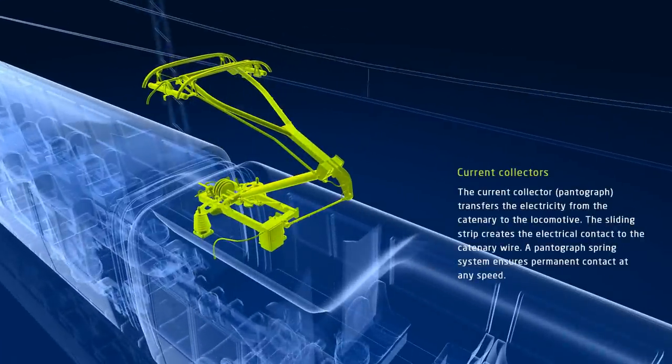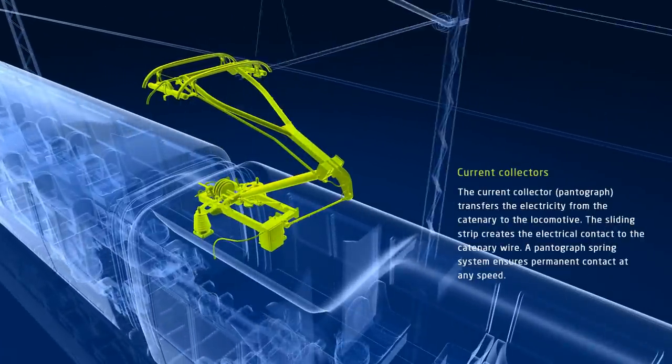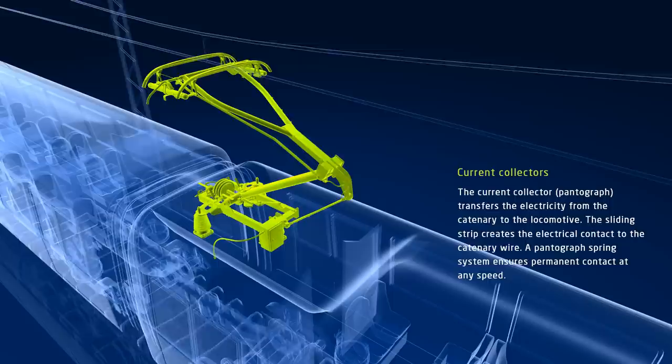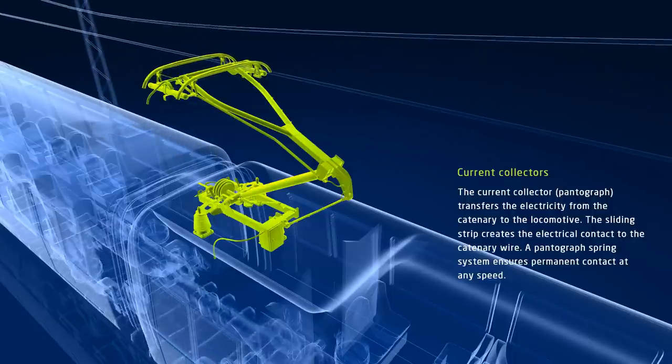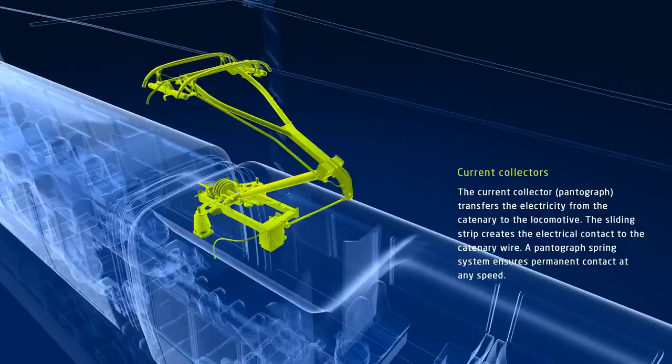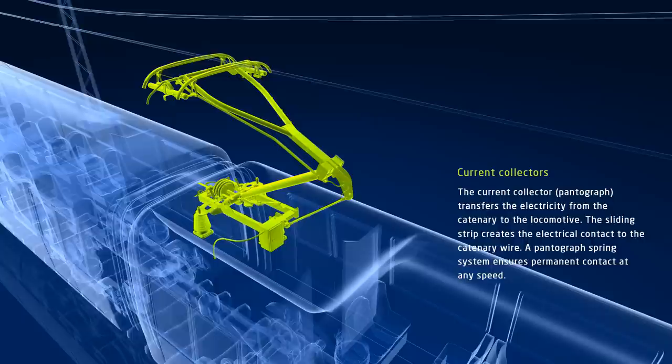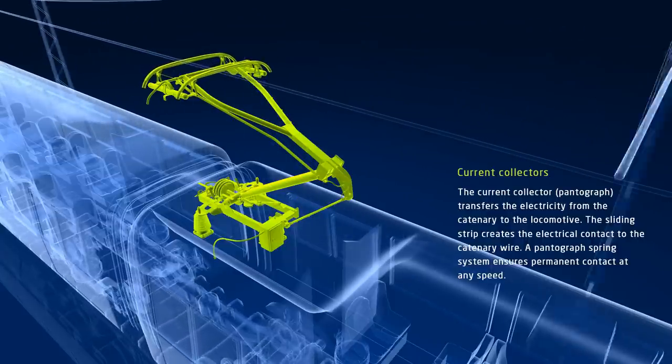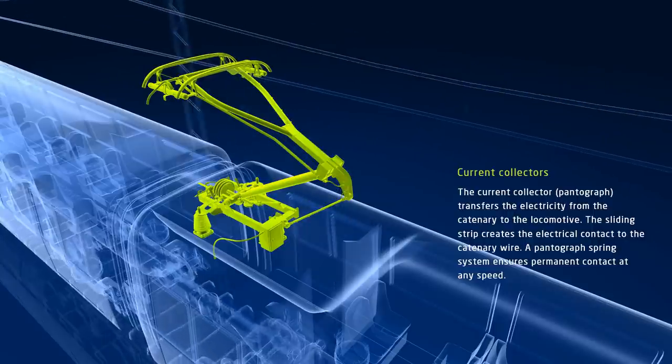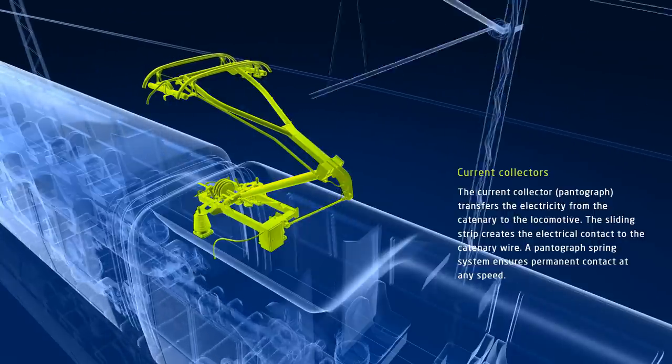Pantographs are current collectors that transfer electricity from the catenary to the train motor. The sliding strip creates the electrical contact to the catenary wire. A pantograph spring system ensures permanent contact at any speed. Even at speeds greater than 400 km per hour, the high-speed pantograph by Schunk guarantees uninterrupted electric current transfer.